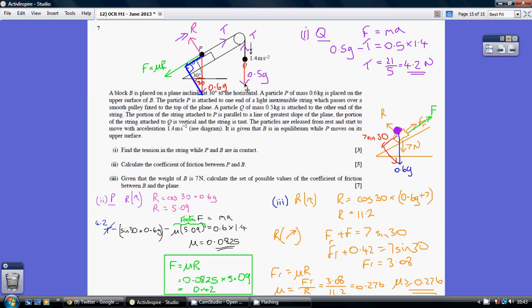So our force downwards is just the pure weight, so 0.5G less the tension, that's the net force downwards, so F equals the mass of Q which is 0.5 times the acceleration which is 1.4, so we can work out that our tension is 21 over 5 or 4.2 Newtons.